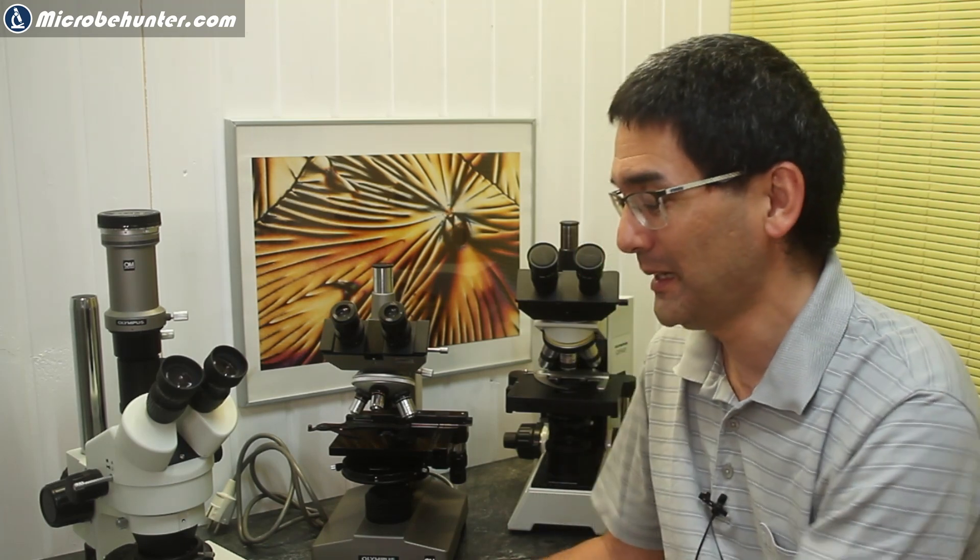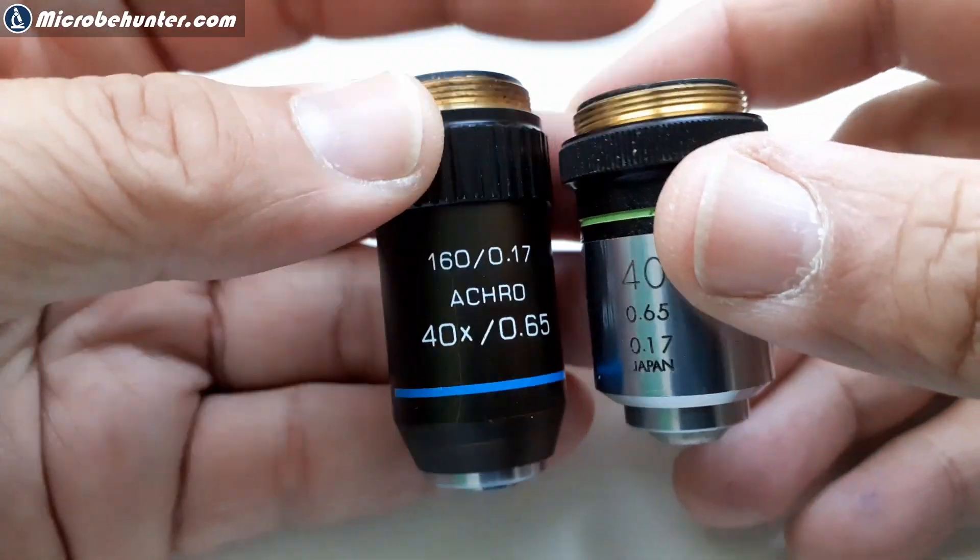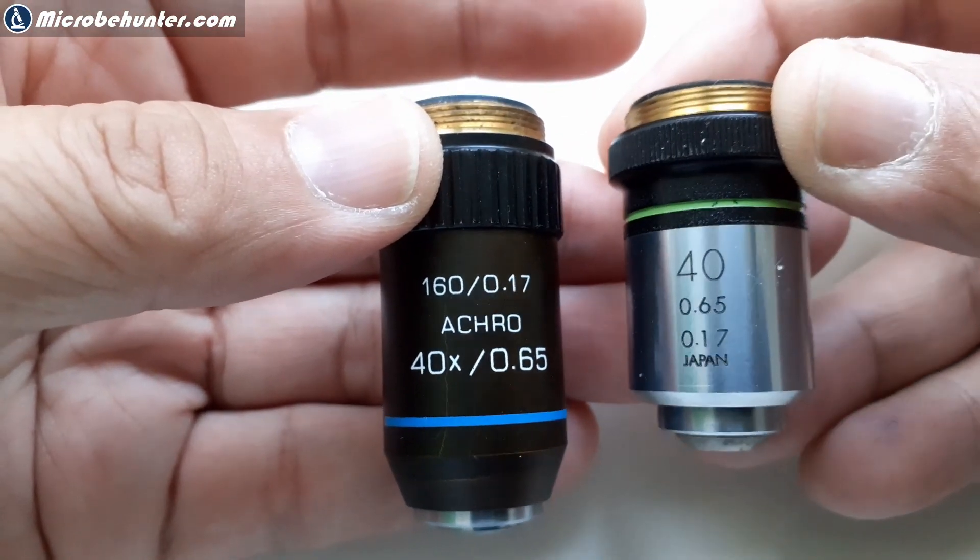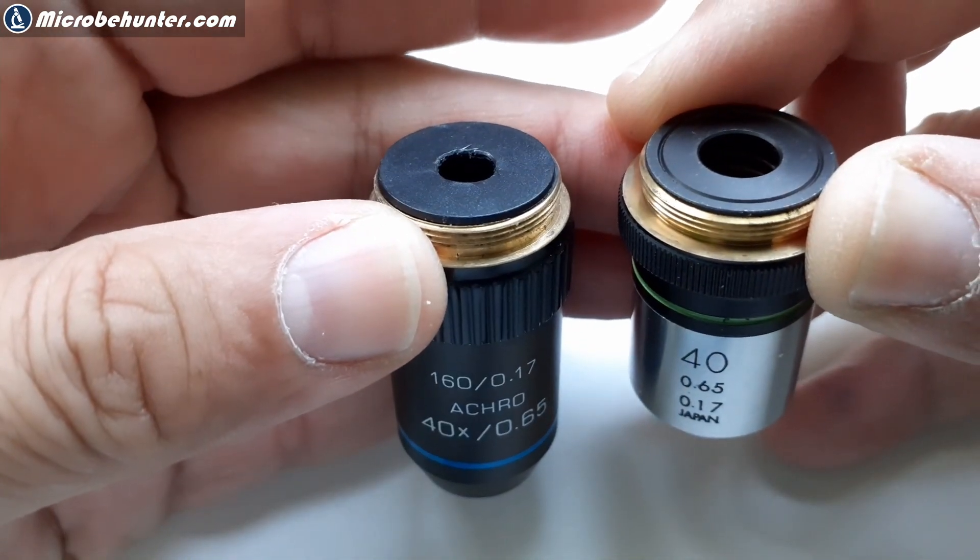Because this is a slightly technical question, I need to explain the basics here, what my viewer was actually referring to. You have to look over here. I've brought two objectives along. Both of them are 40 times magnifying objectives, and you can see that one of them is significantly shorter than the other one.